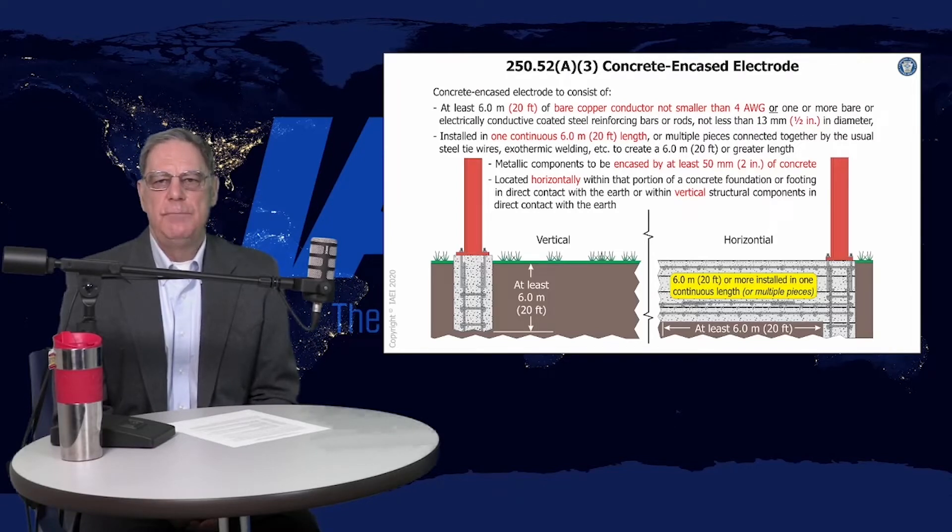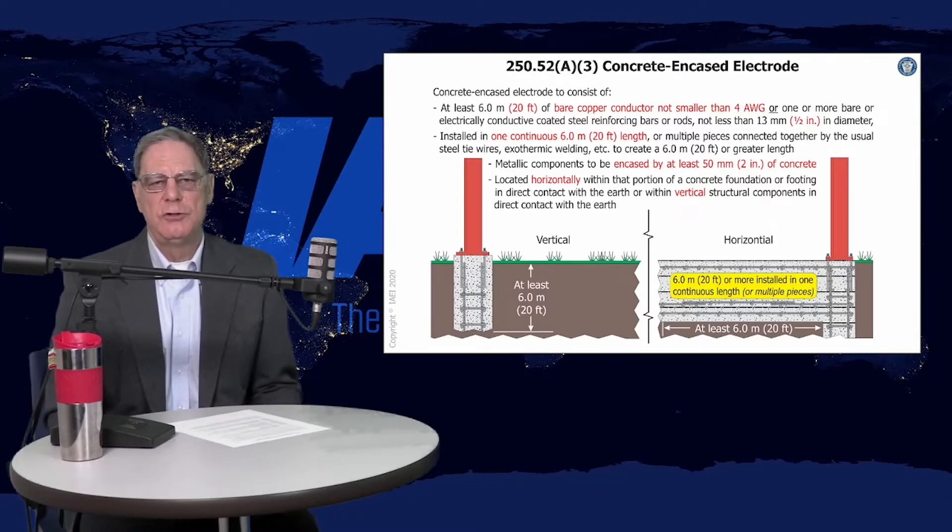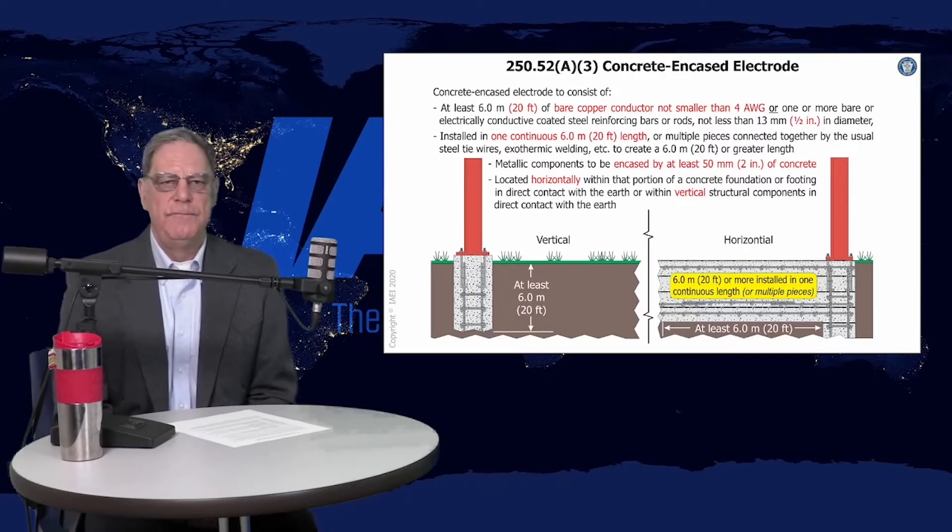At least 20 feet of bare copper conductor, not smaller than 4 AWG, or one or more bare or electrically conductive steel reinforcing bars or rods, not less than a half inch diameter. The reinforcing bar can be in one continuous length or in multiple lengths that make up that 20-foot length with the usual tie wires.